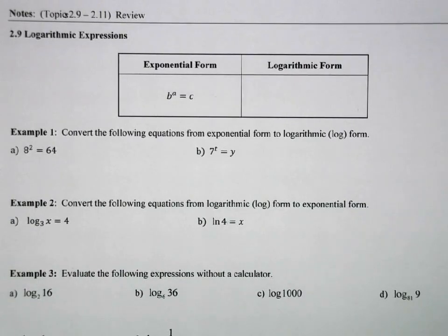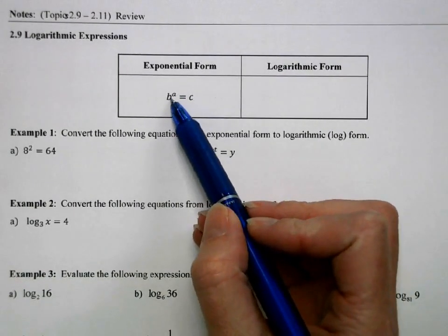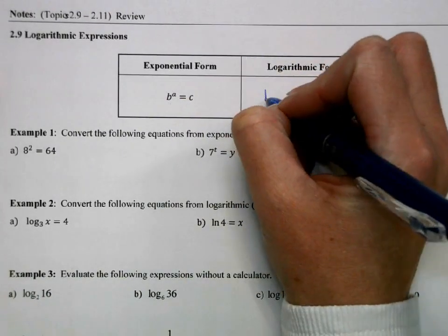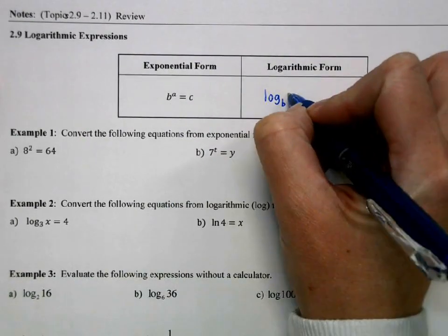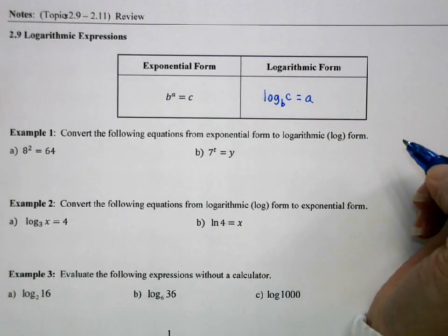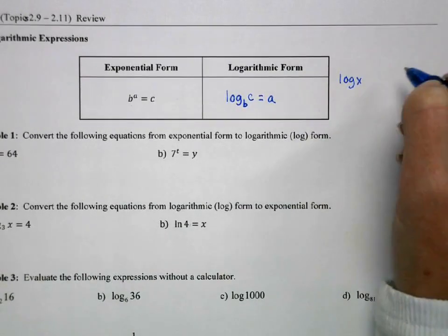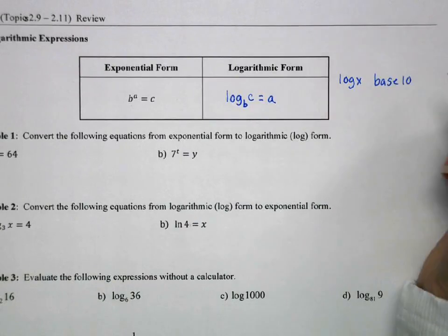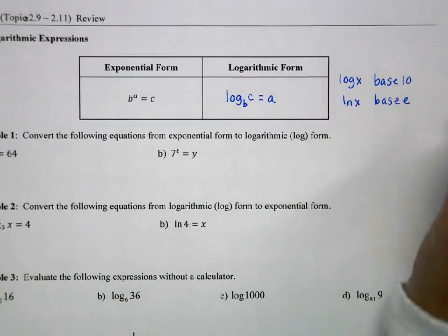2.9 is about logarithmic expressions, looking at the difference between the exponential form of an expression and the logarithmic form. So exponential is going to be b to the a equals c. Whatever the base of the exponent is, is going to become the base of our logarithm. So we write log base b. Whatever goes on this side comes to join the log, and then the exponent is all by itself. Some special notes: if you see log x, that's a common logarithm of base 10 if there's no number there. And then if you see ln x, that is base e.